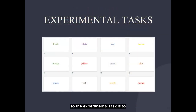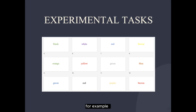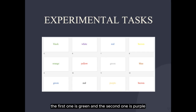The experimental task is to say the color of the text and not read the word — for example, the first one is green and the second one is purple, the third one is blue and the fourth one is yellow.